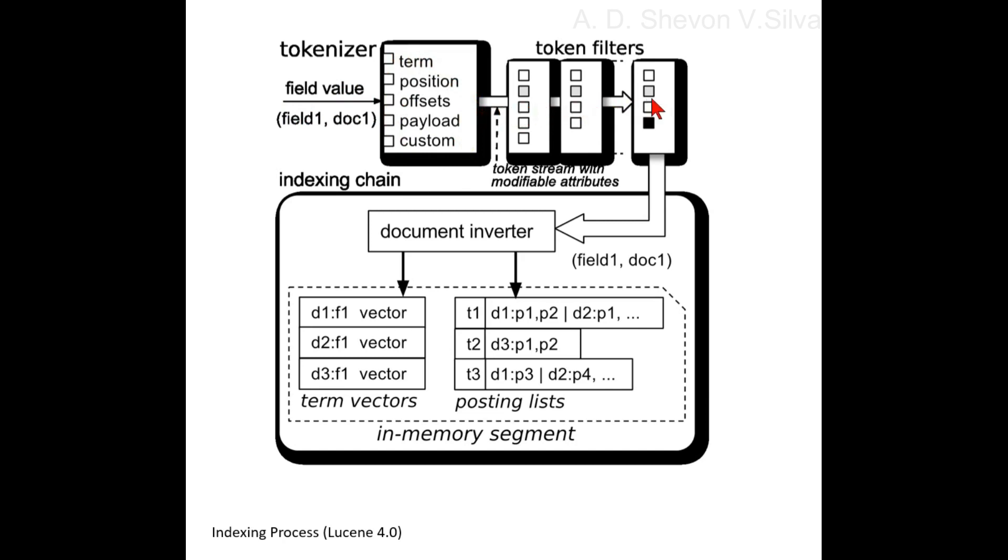Token filters are connected to the document inverter. Here you can see the indexing chain and in-memory segment. The document inverter is connected to term vectors and posting lists. Here you can see the term vectors and the posting lists.